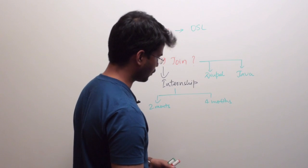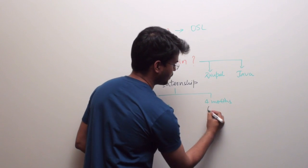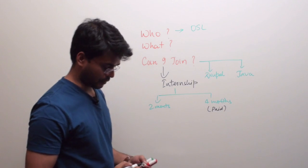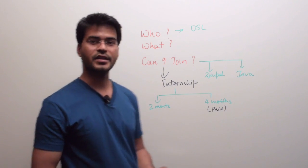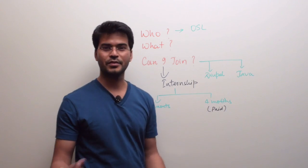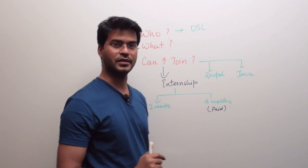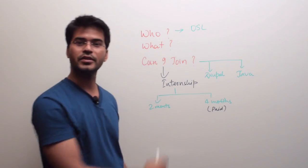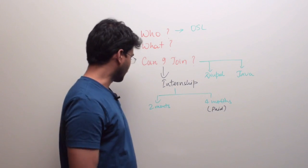So this four month will be paid. We will pay you enough salary to sustain here in Delhi. Don't expect it to be a salary which somebody gets in a job. So that will be a stipend. That's why we call it stipend. That will be a stipend, but that will be enough to sustain you in Delhi.